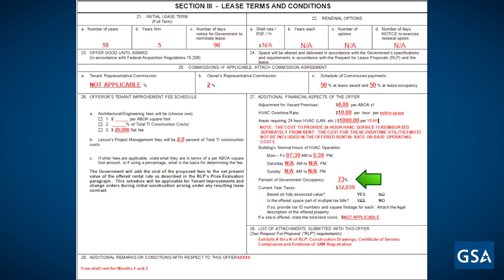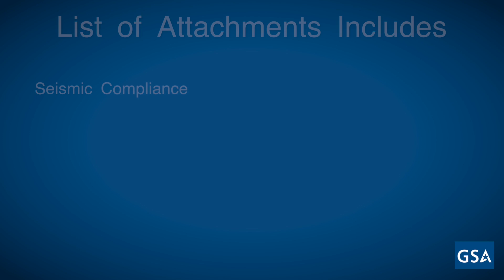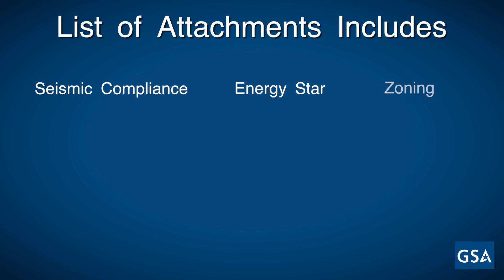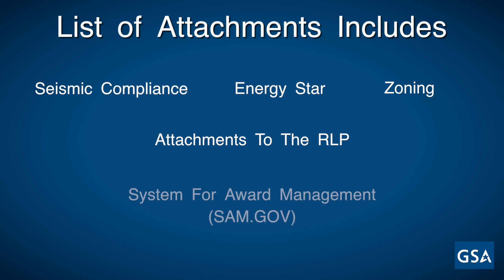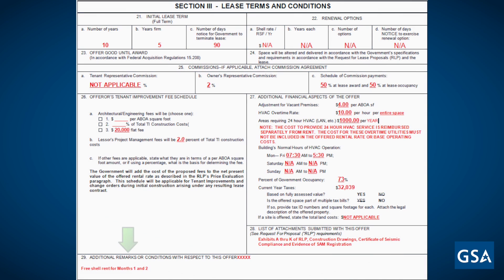In the example shown, the government is occupying a rounded 73%. Box 28 would be used to list any attachments submitted with the offer, such as seismic compliance, Energy Star, zoning, attachments to the RLP, and evidence of a System for Award Management registration. In Box 29, fill in any other remarks or conditions with respect to your offer. For example, if you are offering free rent for the first two months, you would state that in this box. Please be aware that if you impose conditions contrary to the government's stated requirements in the RLP and lease, your offer may be deemed technically non-compliant.